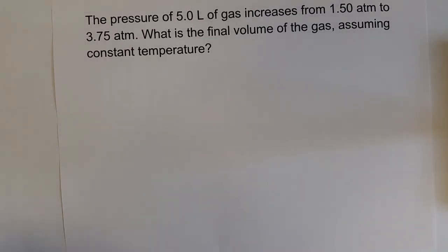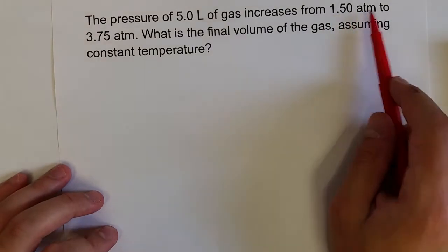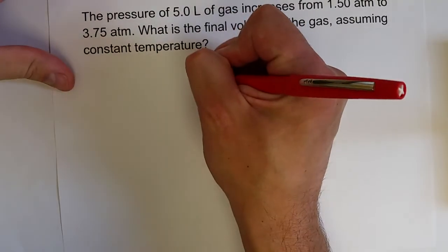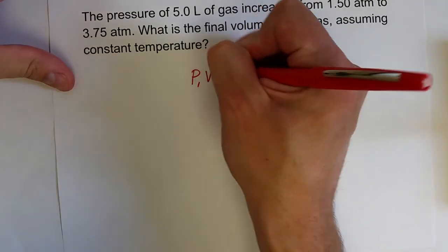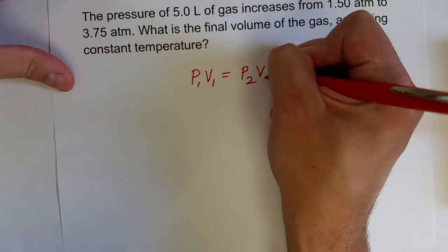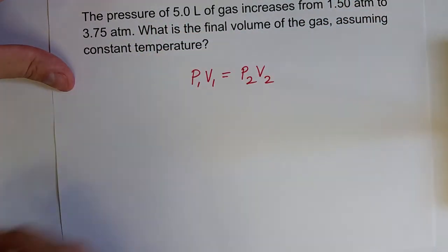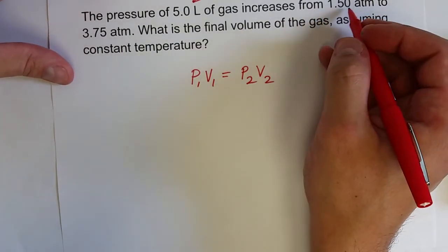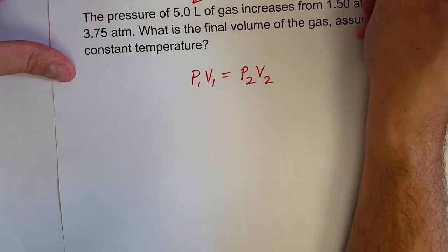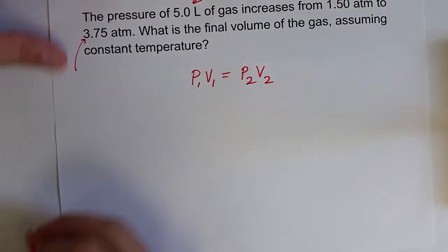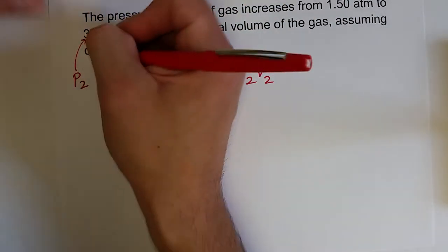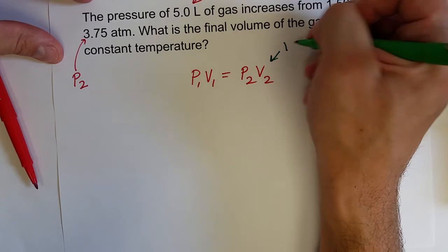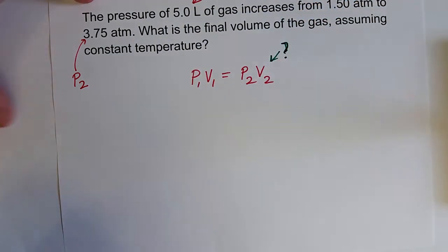The pressure of five liters of a gas increases from 1.5 atm to 3.75 atm. What is the final volume of the gas? Our equation is P1V1 equals P2V2. The pressure of the gas, or five liters of gas, so this is our initial volume V1, increases from an initial pressure, so that's going to be our P1. And then of course this final pressure would be our P2. What are we looking for? We're looking for a final volume, or V2.